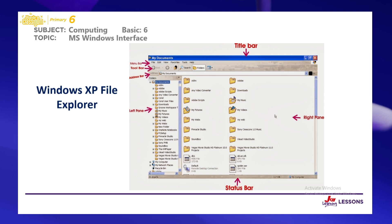Let's look at some of the features of the Windows XP File Explorer. We have the menu bar, which includes File, Edit, View, Favorites, Tools, and Help. We also have the toolbar, the address bar, and the left pane where we see other locations and folders. We have the title bar, the right pane, and the status bar.